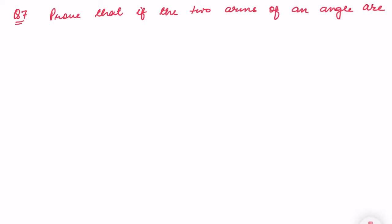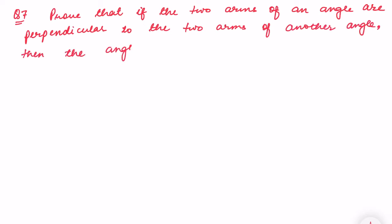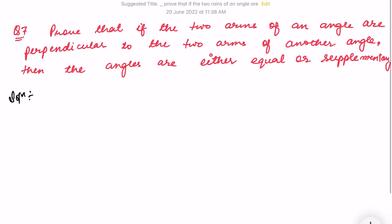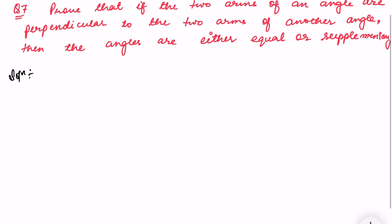We are doing exercise 6.3, question number 7. The question says: prove that if the two arms of an angle are perpendicular to the two arms of another angle, then the angles are either equal or supplementary.